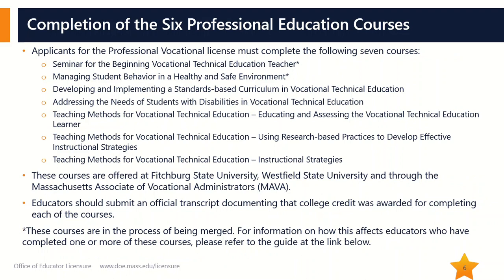Educators should note that applicants were previously required to complete seven courses. However, due to the 2020 regulation changes, the content for the courses — Seminar for the Beginning Vocational Technical Education Teacher and Managing Student Behavior in a Healthy and Safe Environment — is being merged into a new course, bringing the total down to six. This course is in the process of being created and will soon be offered. In the meantime, the licensure office has developed a substitution policy to allow educators to complete the license requirements. A guide detailing this policy may be found at the link below.